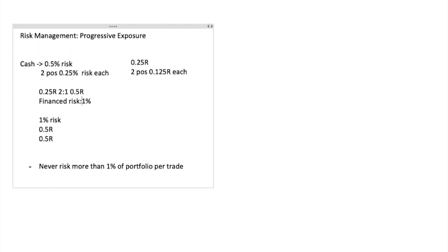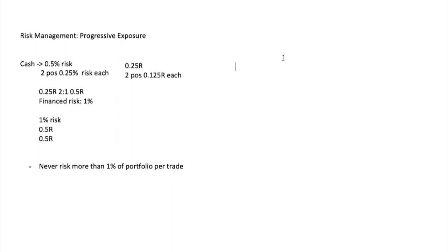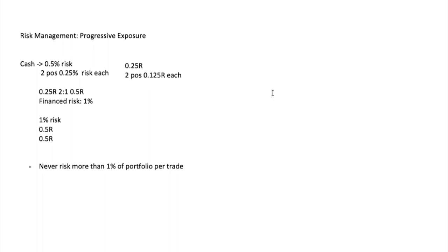As your account grows you're going to be compounding because your position size gets higher and higher, so you'll see an exponential growth curve. When things are not working, you'll also see an exponential curve but in the other direction — your losses get smaller and smaller because your position size gets smaller and smaller. This is why progressive exposure is so important.